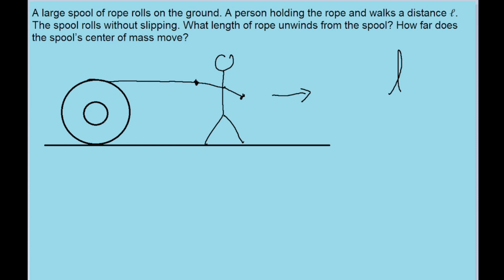Let's think about the different parts of the spool and how they'll move relative to each other. The center point is where the center of mass is, so it moves to the right at V sub CM, and the edge point has a tangential speed V. This top point on the spool is the last point of contact between the rope and the spool, and it is right above the center of mass. That tells us the spool will unwind at the same rate as the spool's center of mass moves, so the answer to both parts of the problem should be the same.